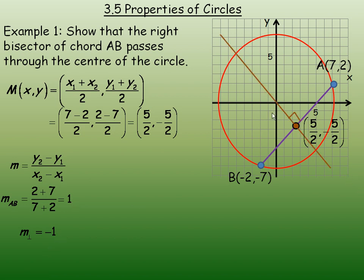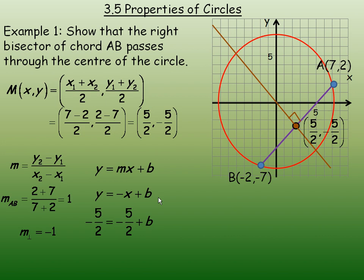So the equation of this perpendicular bisector, using slope-intercept form, has m equal to negative 1: y equals negative x plus some y-intercept b. We can find b by substituting negative 5/2 in place of y and 5/2 in place of x. Notice there is a negative x, so that is why this ends up being negative 5/2 as well. So b would have to be 0, which means the equation is y equals negative x.